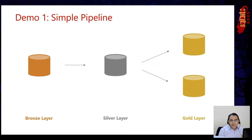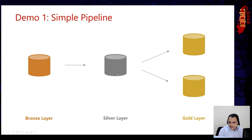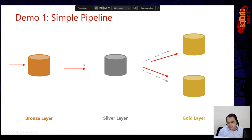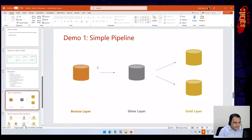Let me show you the first pipeline we're going to build. We'll start simple: one entity in the bronze layer, one in the silver layer — raw data landing, cleaned up into silver. Then we'll build two summary tables in the gold layer. We'll understand all the components and then build a more complex pipeline. Let's look into that demo.